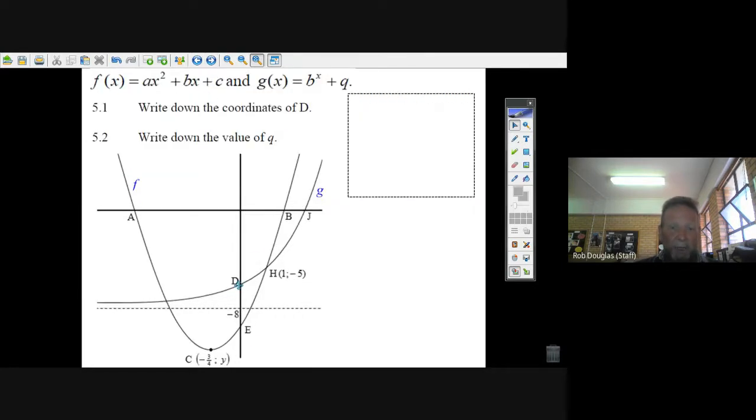Write down the coordinates of d. Well, d is the y-intercept of the exponential equation. Now, we happen to know that q is minus 8, because that's the asymptote. So we kind of have the equation. And all we do is we let x equal 0. But b to the 0 is 1, and 1 minus 8 is negative 7. So the coordinates of d must be (0, -7).